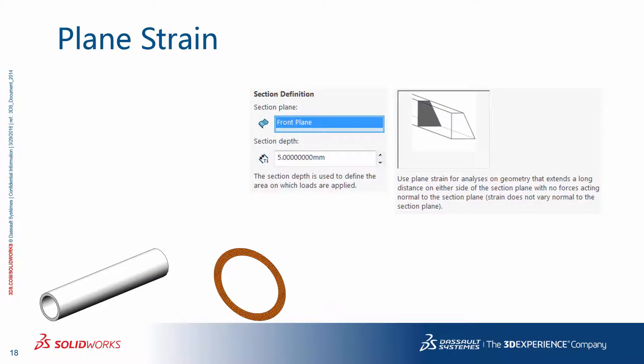You use a plane-strain 2D analysis for geometries that are long, where the behavior of a cut section is representative of the behavior along the length — so there is no force normal to the section plane. After creating the study, you define the cut plane and the section depth used to define the area on which loads are applied. At the post-processing level, you have the option of visualizing the plot in 3D by thickening the plot as before.